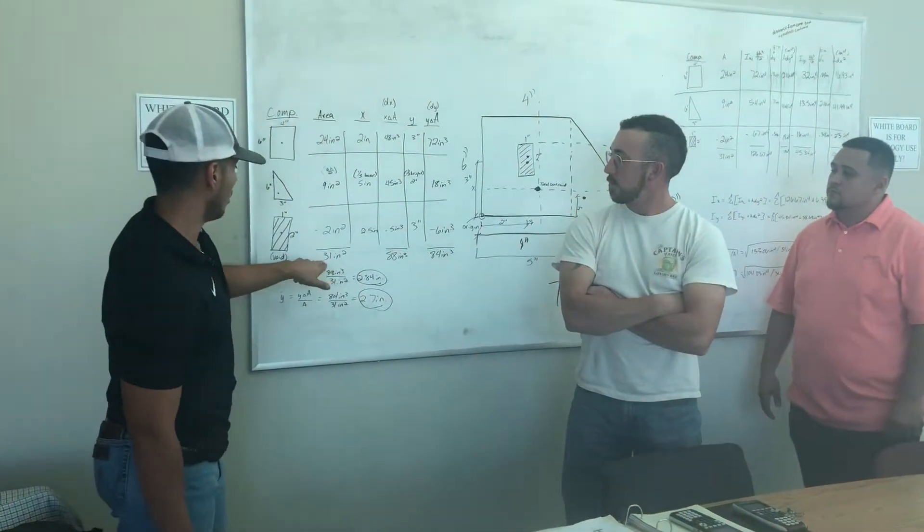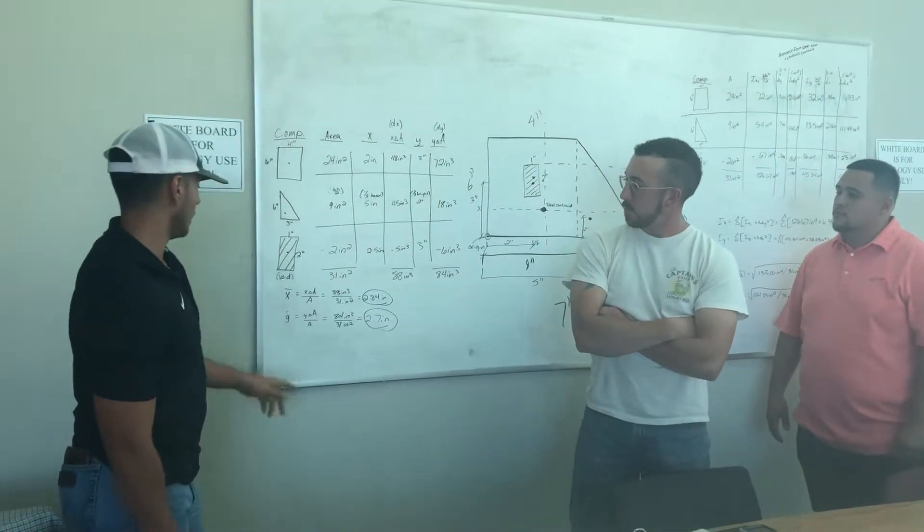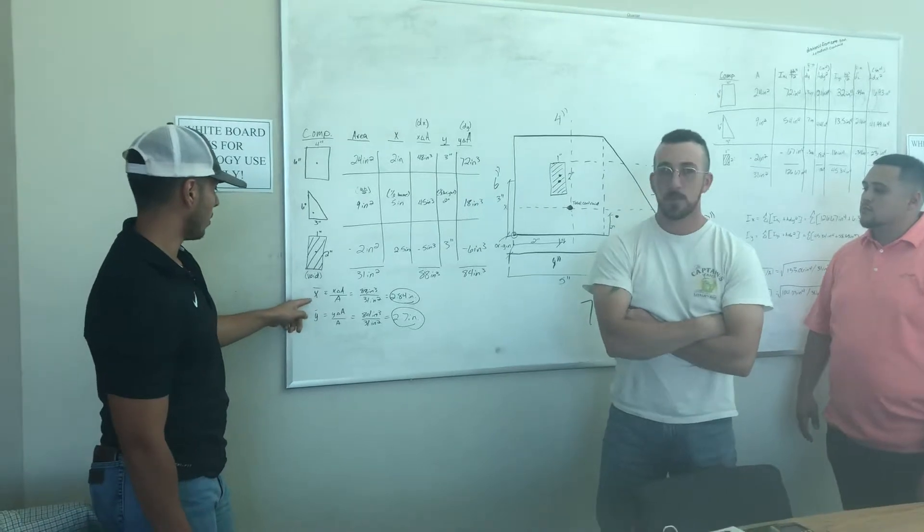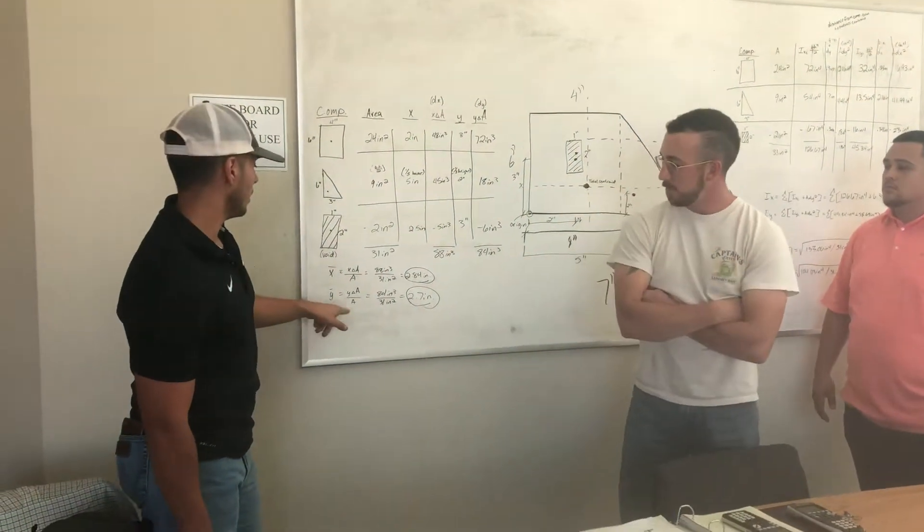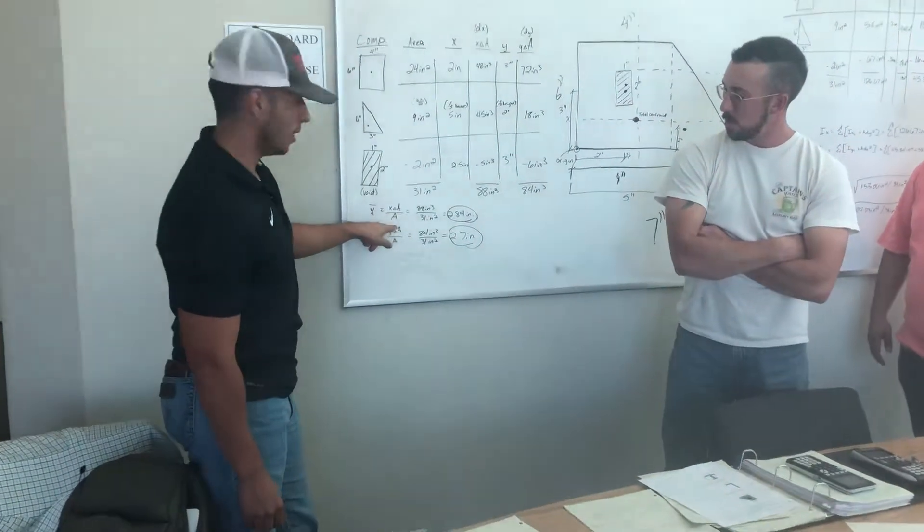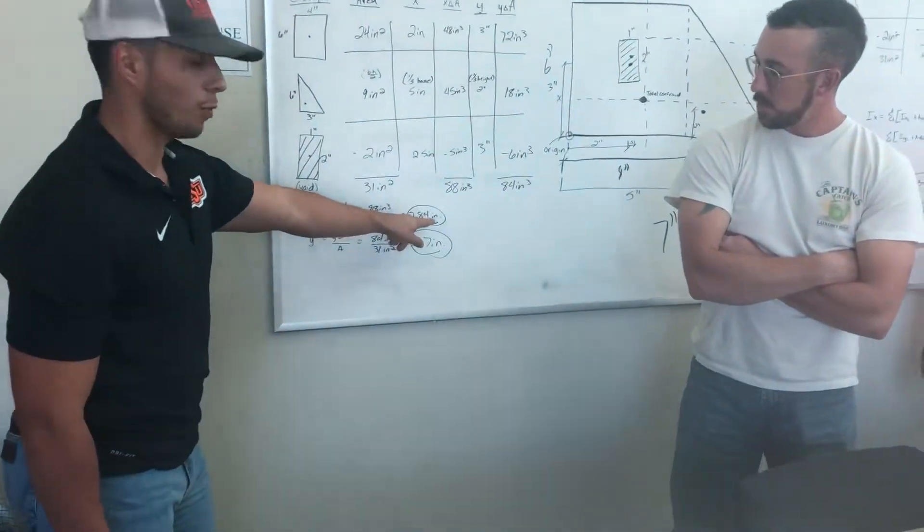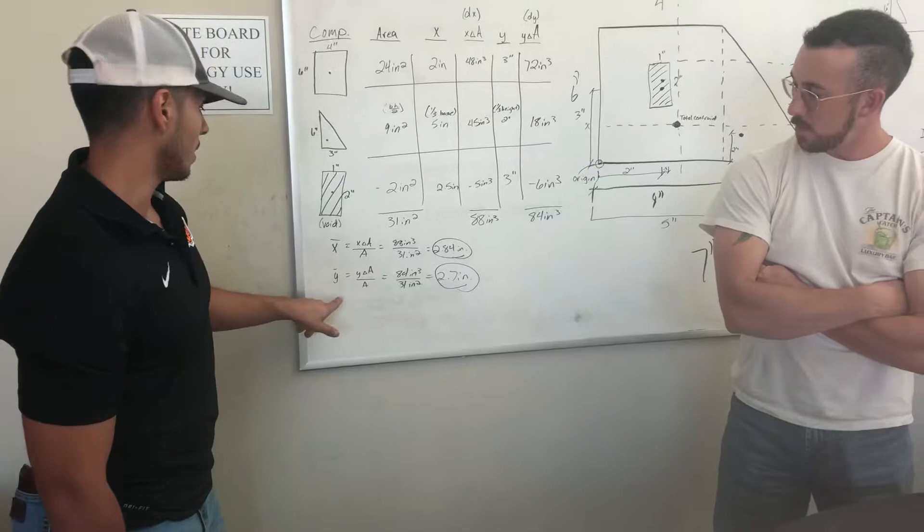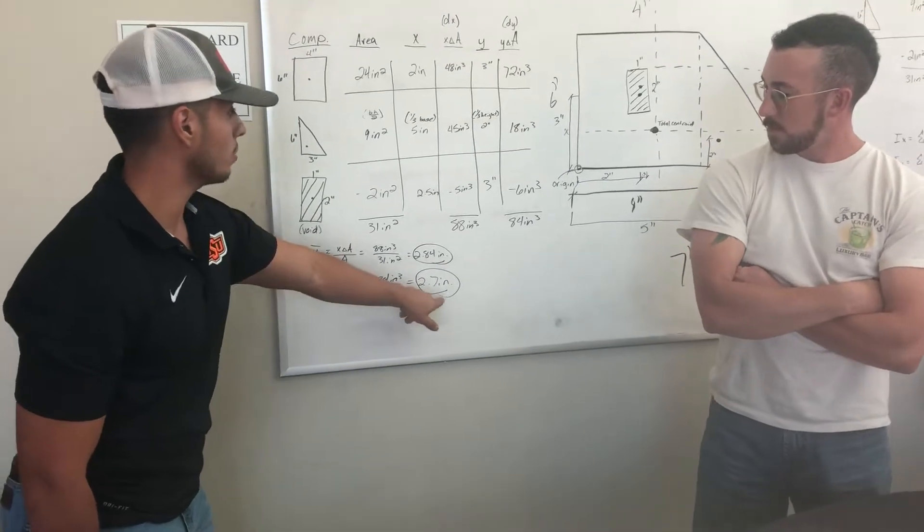Then you total all of them up and solve for X bar and Y bar. You do that by dividing XA over A, which will give you 2.84. Then you do the same thing with Y, which will give you 2.7.